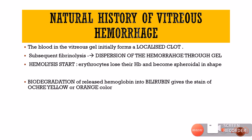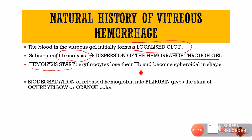The natural history of vitreous hemorrhage begins with formation of a localized clot. This clot then undergoes fibrinolysis and breaks down, followed by dispersion of the hemorrhage through the gel. After dispersion, hemolysis occurs — the erythrocytes break down and lose their hemoglobin, changing from biconcave to spheroidal shape. The released hemoglobin undergoes biodegradation, converting the red hemoglobin first into bilirubin, which is yellow, staining the vitreous an ochre-yellow or orange color.